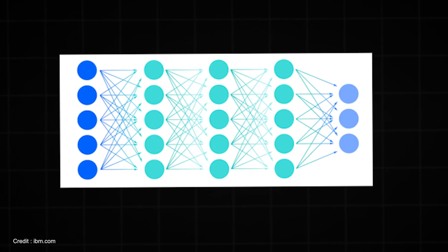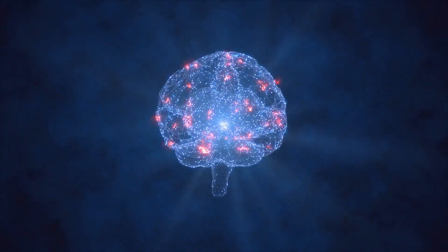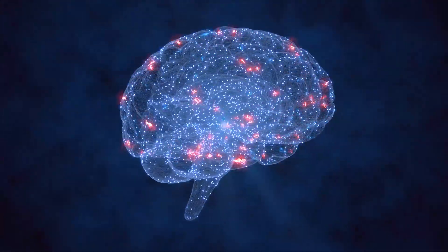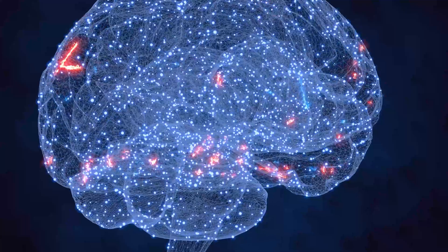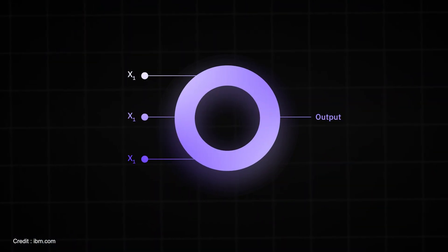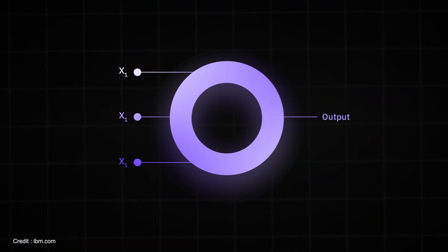These neural networks are inspired by the structure of the human brain. Just as we have neurons in our brain, neural networks are also made up of artificial neurons. A single neuron takes some input, processes it, and produces an output.